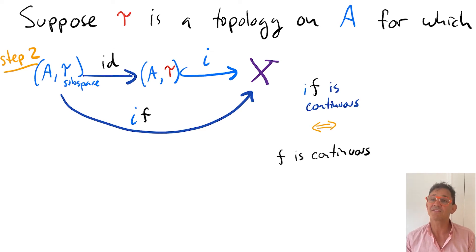But we know that the inclusion of A with the subspace topology into X is continuous. That's because of the way that subspace topology is defined. So that the inclusion into X is continuous.